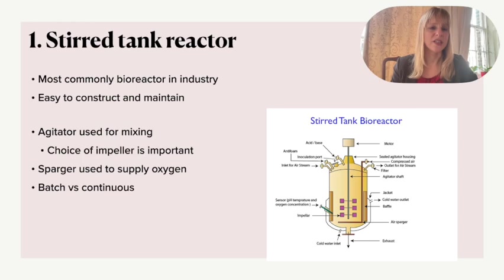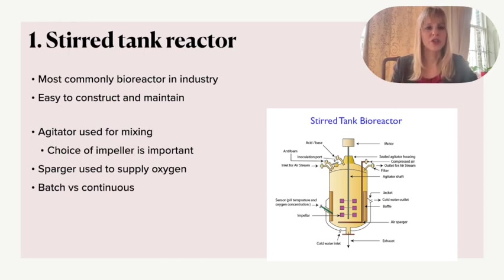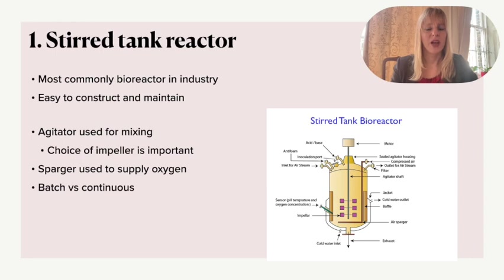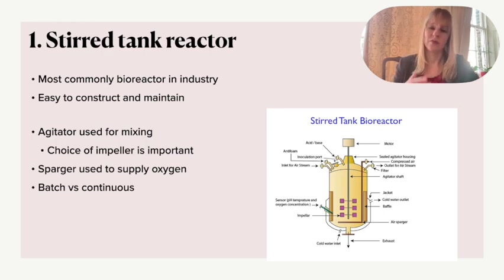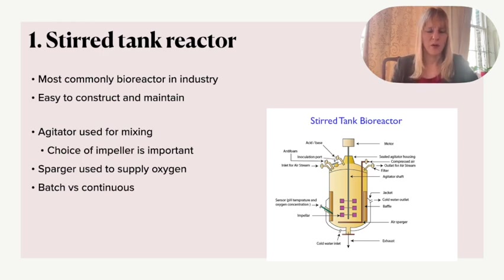Depending on the system that you work with you probably want to pick a different type of impeller because they work in different ways. If you're working with an aerobic culture you would have a sparger which is used to supply the oxygen, and then the impeller will make sure that both the oxygen and the nutrients are properly mixed. It would also keep the substrate well controlled; it's very easy to control the pH and temperature. But one of the things that can be a problem is that this mechanical mixing can create some shear stress which is harmful to certain microorganisms.